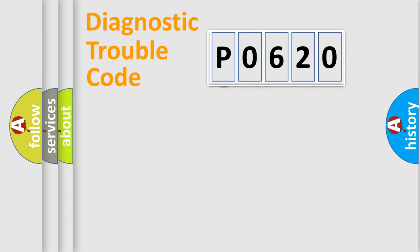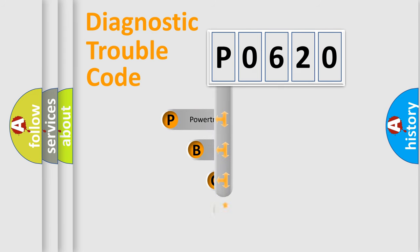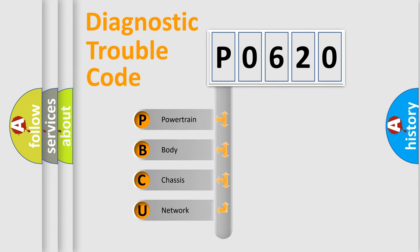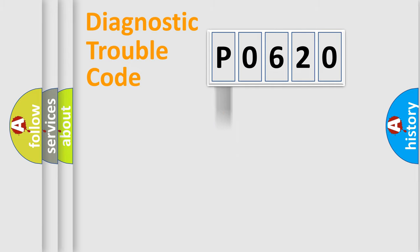Let's look at the history of diagnostic fault code composition according to the OBD2 protocol, which is unified for all automakers since 2000. We divide the electric system of automobile into four basic units: Powertrain, Body, Chassis, and Network. This distribution is defined in the first character of the code.